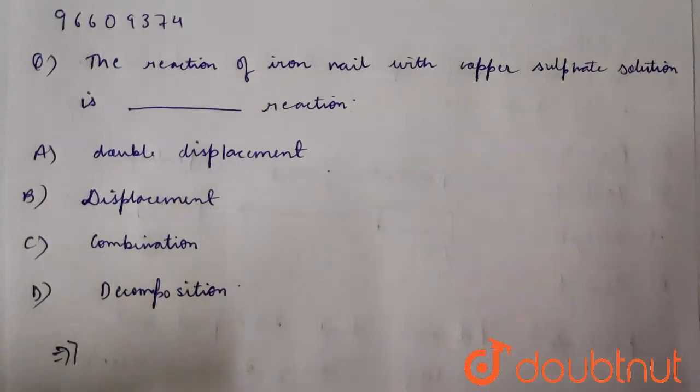And the color of the aqueous solution, the color of the copper sulfate solution changes from blue. In copper sulfate solution, it is blue. So what happens? Blue to green.